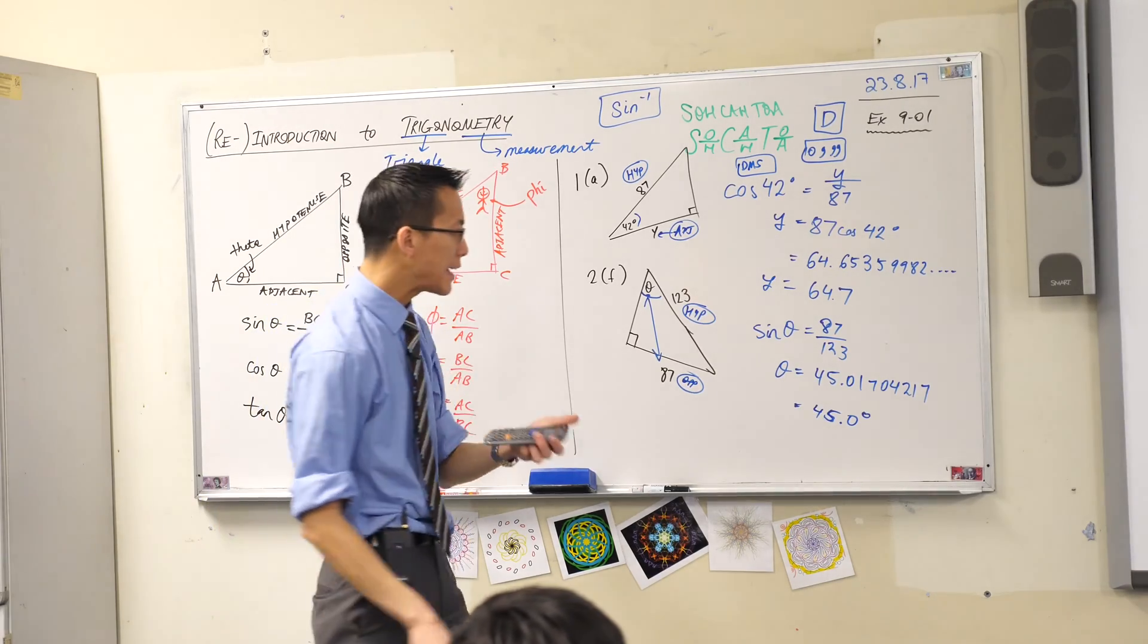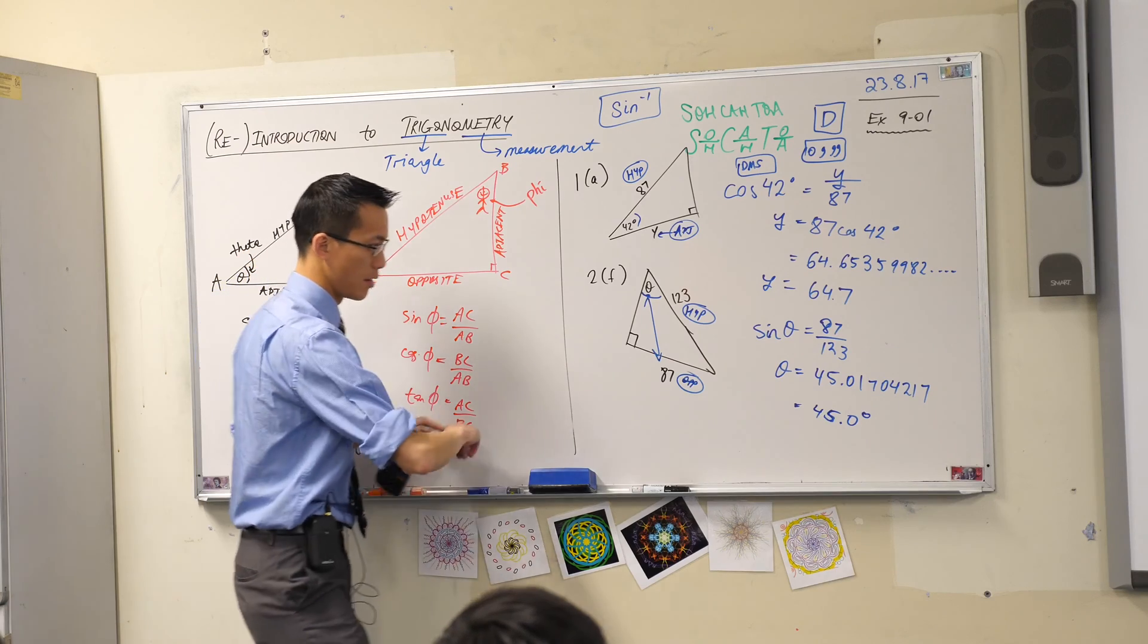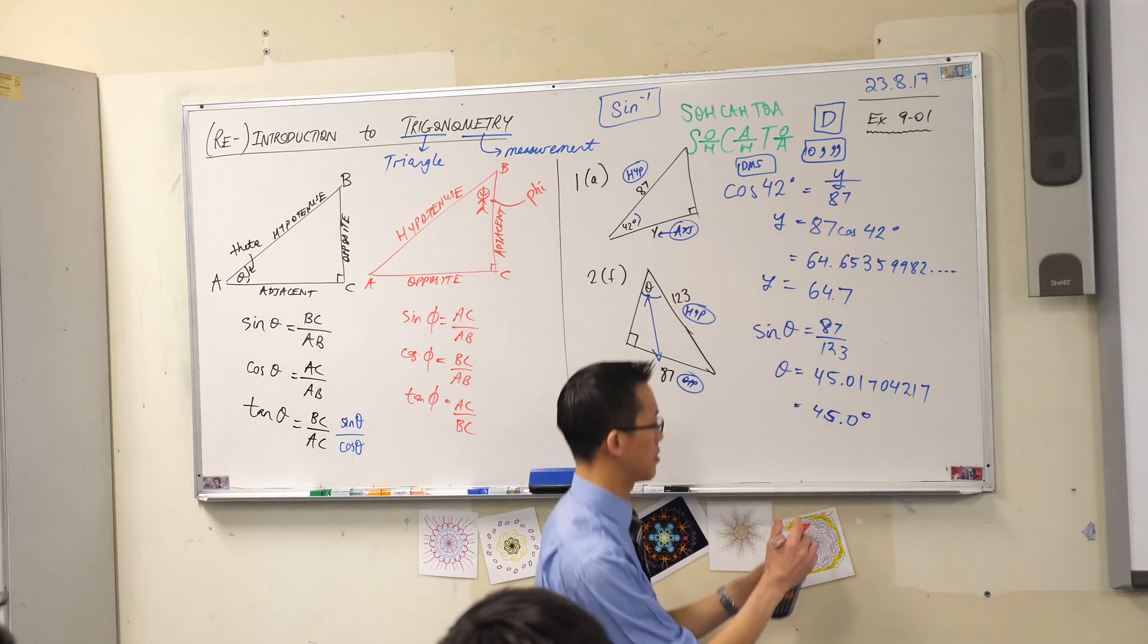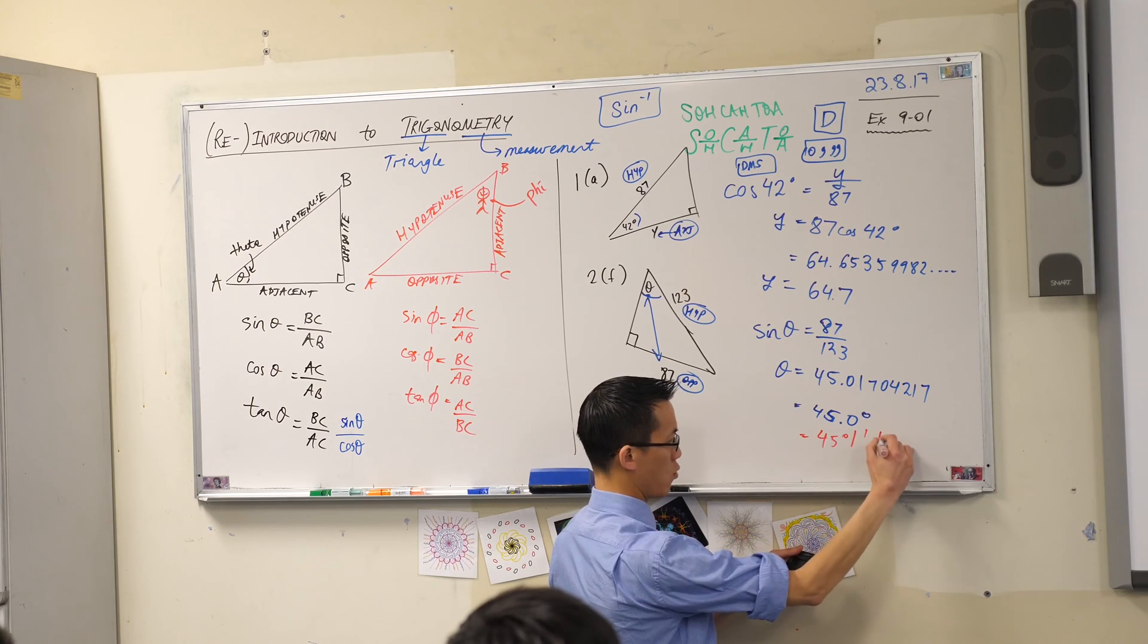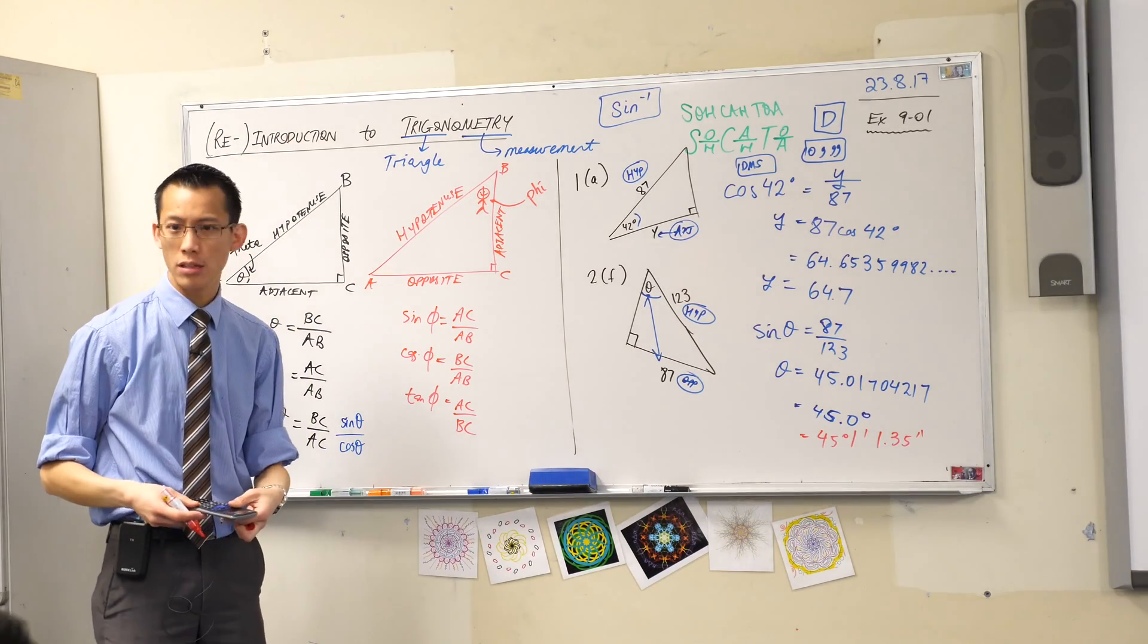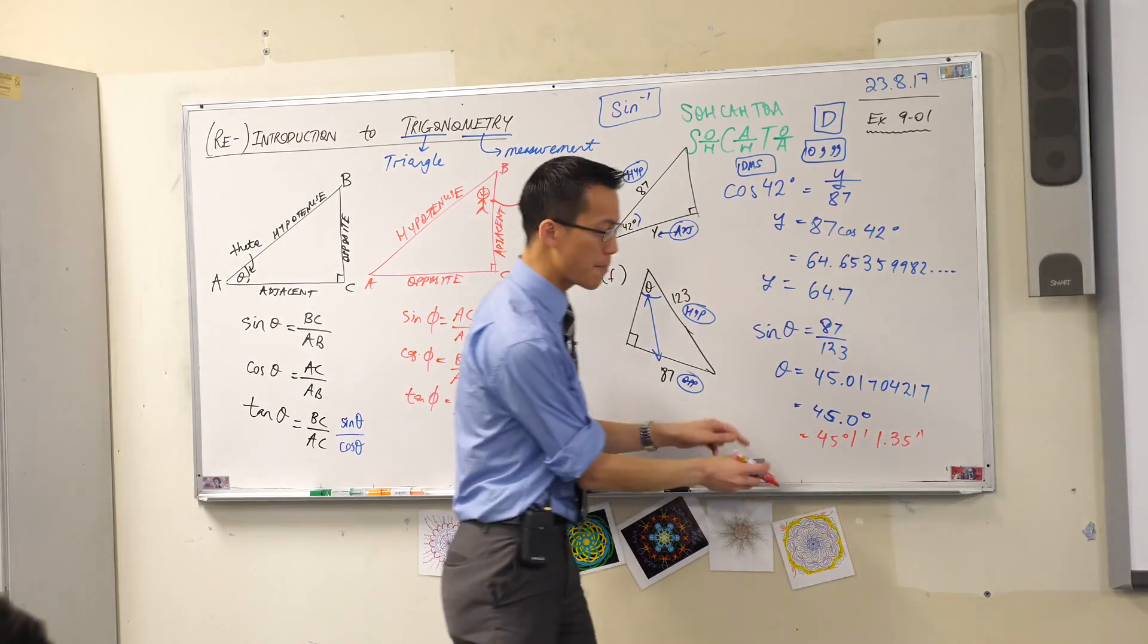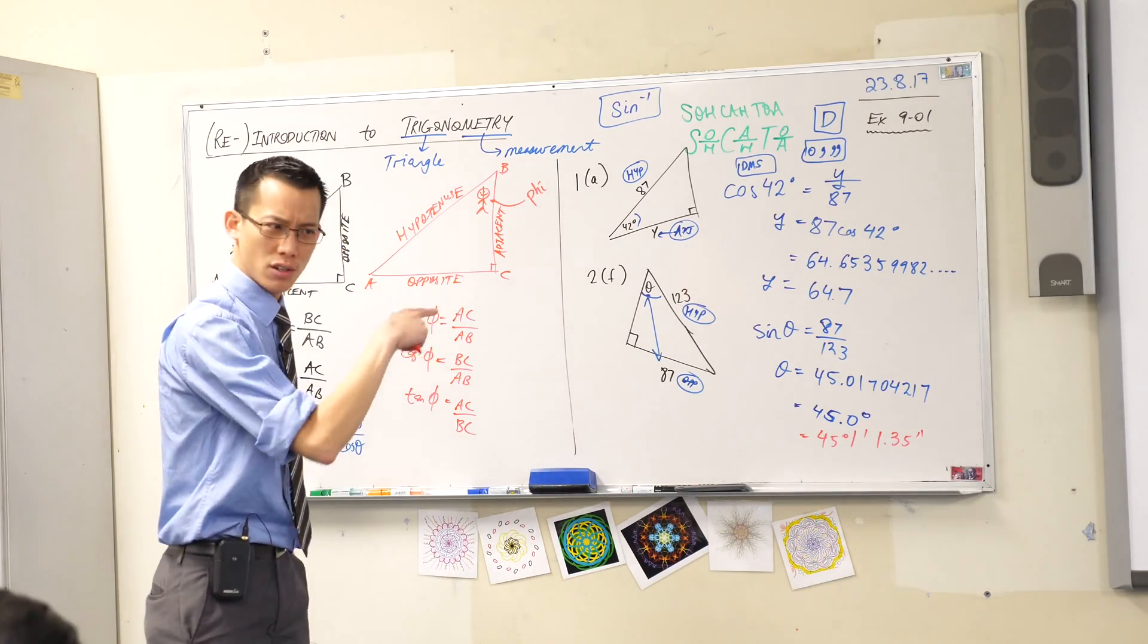Okay, and then what my calculator display says is - I'll put this in another color - my calculator display says this: 45, 1, 1.3. Okay, does yours match? Does that look okay? All right, now this is really important. Put your pens down and look up for a second, because you've got to know how to read this.